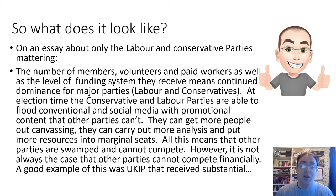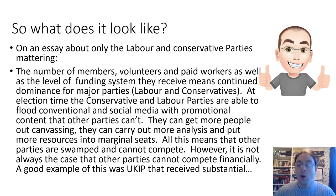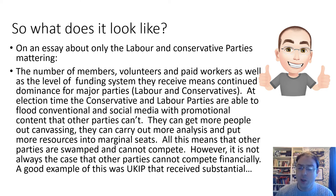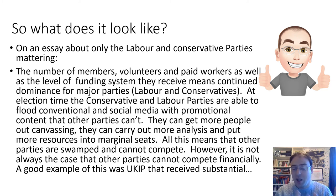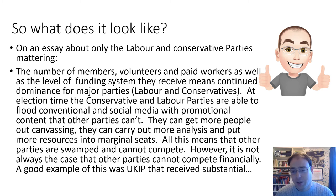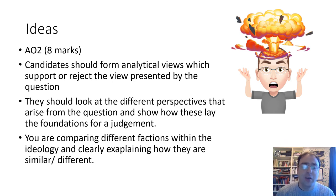Now, showing that balance and connection: 'however, it is not always the case that other parties cannot compete financially' — and then I'd go into the AO1 detail, talking about the money UKIP received fighting the 2015 and 2017 elections. Then I'd come back and analyse that. At the end of this section would be my AO3 bit — my judgment about which of those two arguments is ultimately the strongest. So the structure is: make a point, go into the AO1 detail, analyse that detail, connect it to a counterpoint (more AO2), do the AO1 for the counterpoint, more AO2 analysis, then link into AO3.